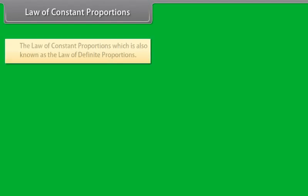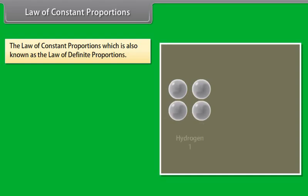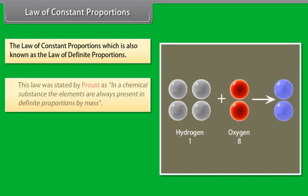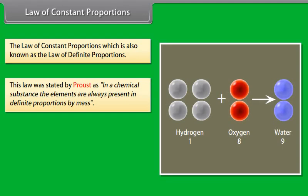Law of Constant Proportions, which is also known as the law of definite proportions. This law was stated by Proust. In a chemical substance, the elements are always present in definite proportions by mass.